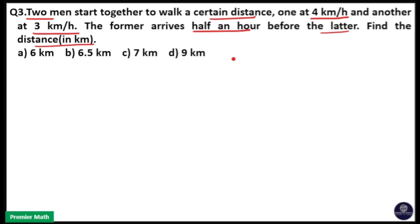Here, we have to find out the distance. Two men walk a certain distance, that means they walk the same distance. So distance is common here, that means distance is constant. We have to find out speed and time ratio. Speed will be inversely proportional to time when distance is constant.